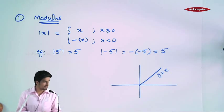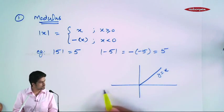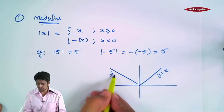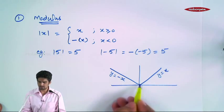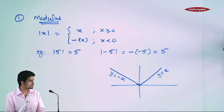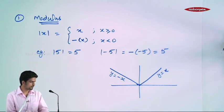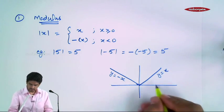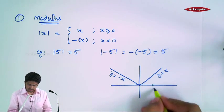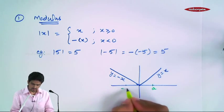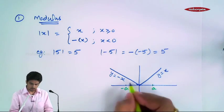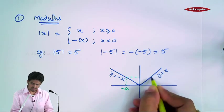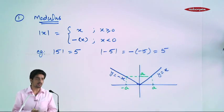So that was negative hai yaani ki ye wali values, it is y equal to minus x. Clearly, a ya minus a, in dono pe jo value aegi, it will be a.